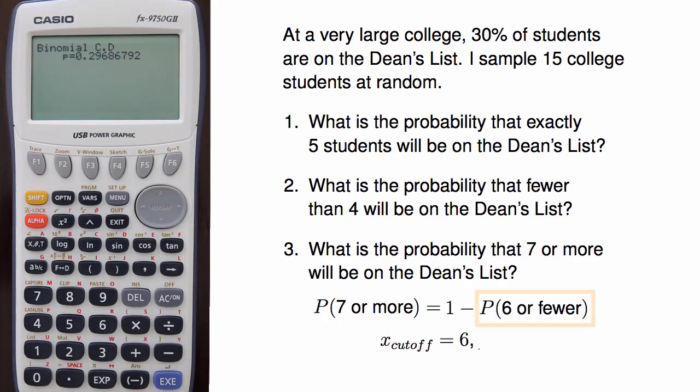So as before, I need to determine x, which in this case is going to be 6, since I'm going to be looking for the lower tail, and again, I'll be subtracting the result from 1. As before, the number of trials is 15, and the probability is 0.3.